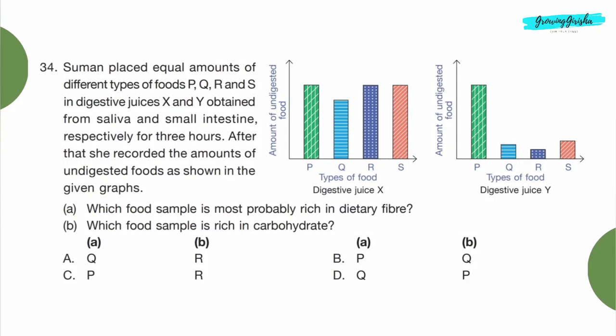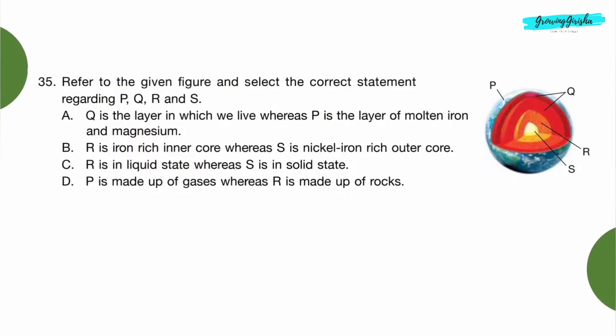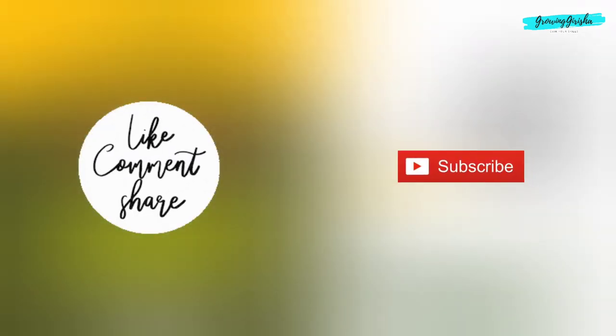Question 34: Someone placed equal amounts of different types of foods P, Q, R, and S in digestive juices X and Y obtained from saliva and small intestine respectively for three hours. After that she recorded the amounts of undigested food as shown in the given graphs. A: Which food sample is most probably rich in dietary fiber? B: Which food sample is rich in carbohydrates? Option B. Question 35: Refer to the given figure and select the correct statement regarding P, Q, R, and S. Option C: R is in liquid state whereas S is in solid state, which is still moving type in Q, R, and S.